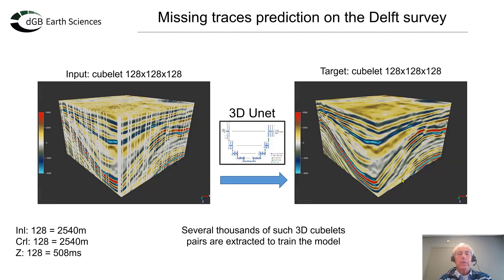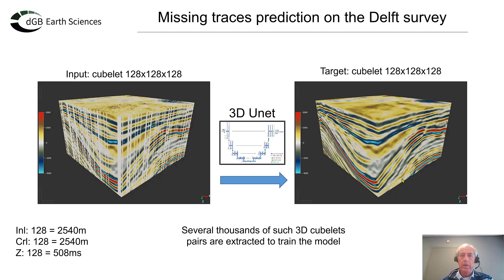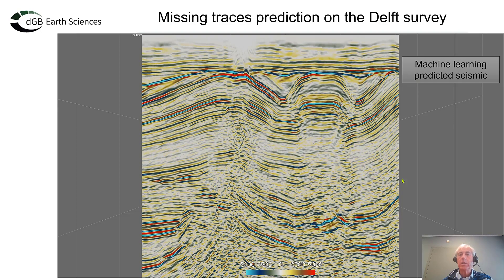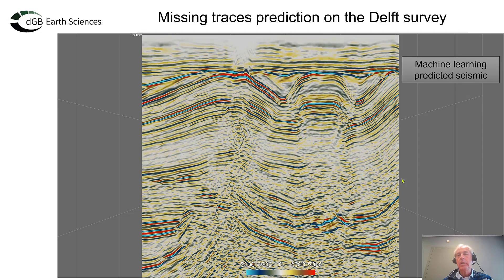The input cubelets in this case are 128 by 128 by 128 samples, and the reconstructed image is also 128 by 128 by 128. We extract several thousands of these cubelet pairs to train our 3D UNET. Looking at the result, this is the artificially blanked input and this is how the UNET has infilled it. Comparing with the original data — the ground truth — we can see there is hardly any difference, so this is a near-perfect interpolation.